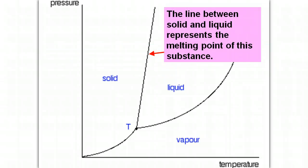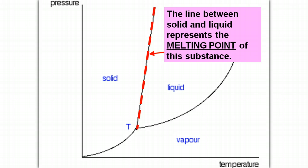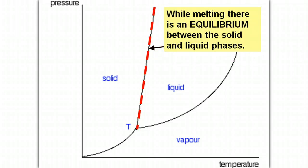The line between solid and liquid represents the melting point of this substance. So anytime you land on this line or the temperature and pressure end up on this line, then it is the melting point. Similarly it's also the freezing point since melting and freezing occur at the same temperature. Therefore while melting there is an equilibrium between the solid and liquid phases.